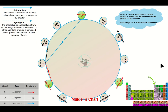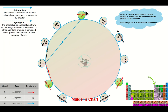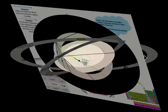Boron, number 5 on the periodic table, is used in cell wall formation and stability, biological membranes, moving sugars, and pollination and seed set. Raising calcium, nitrogen, or potassium lowers boron's availability.